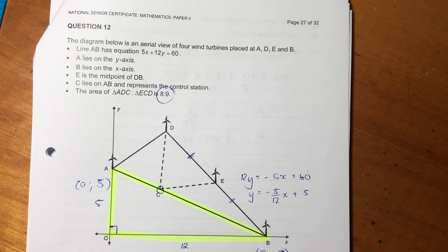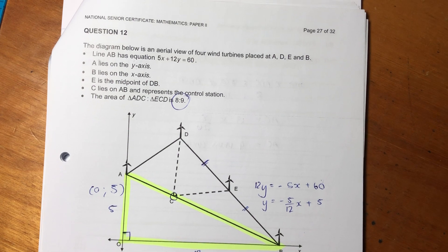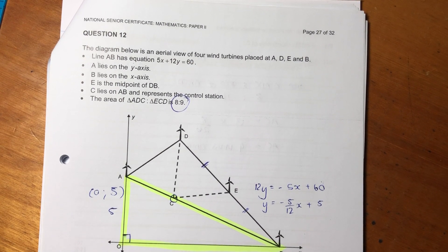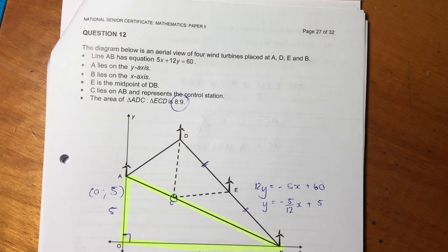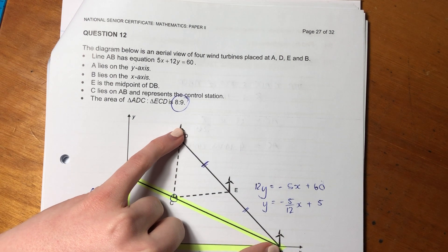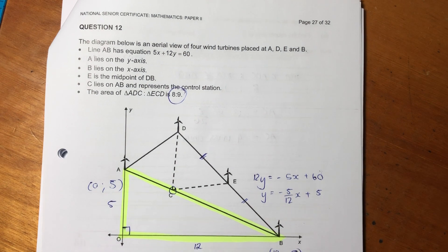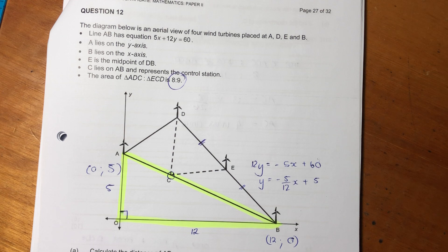Hey guys, so we're going to be looking at question 12 in this video, and this is the last question of this paper. So it says the diagram below is an aerial view of four wind turbines placed at A, D, E, and B. Line AB has an equation 5x plus 2y equals 60. So I've written that out there and have re-shuffled it so that it looks like our traditional y equals mx plus c, right? It's a little bit more accessible.